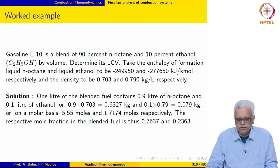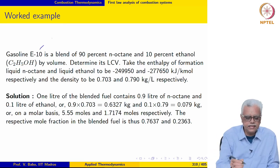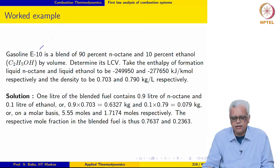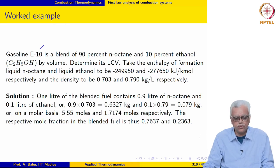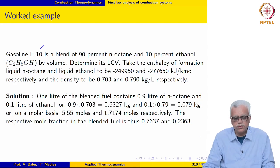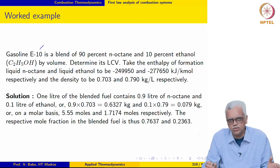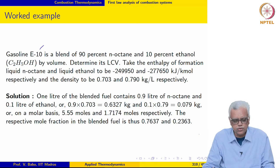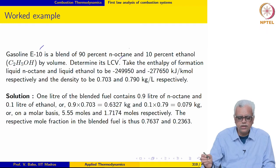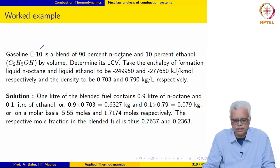The next example we are going to look at involves gasoline E10, which is a blend of 90% N-octane and 10% ethanol. As many of you may be aware, this sort of blended fuel is becoming very popular nowadays. Gasoline is blended with ethanol to not only reduce dependence on oil but also reduce emissions. We are asked to determine its lower calorific value.